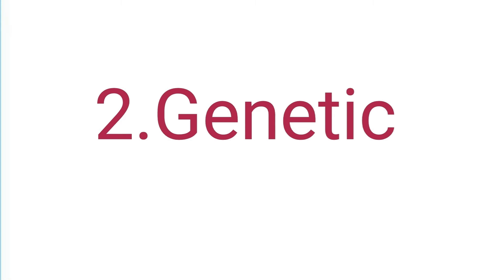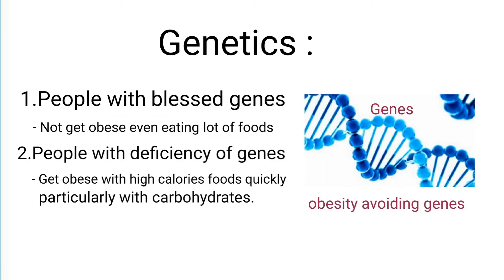Number 2, Genetics. Number 1, People with Blessed Genes. Many people who eat whatever they want but don't get obese are people with blessed genes. These genes permit them to eat whatever they want and burn down carbohydrates and fats adequately. As a result, they never store their food. Number 2, People with Deficiency of Blessed Genes. Many people with deficiency of particular genes store food, particularly carbohydrates, especially in the belly area of their body.